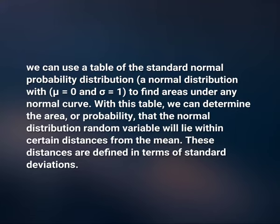It is not possible or necessary to have a different table for every possible normal curve. Instead, we can use a table of the standard normal probability distribution — a normal distribution with mu equal to 0 and sigma equal to 1 — to find the area under any normal curve. With this table, we can determine the area or probability that a normal distribution random variable will lie within certain distances from the mean. These distances are defined in terms of standard deviations.